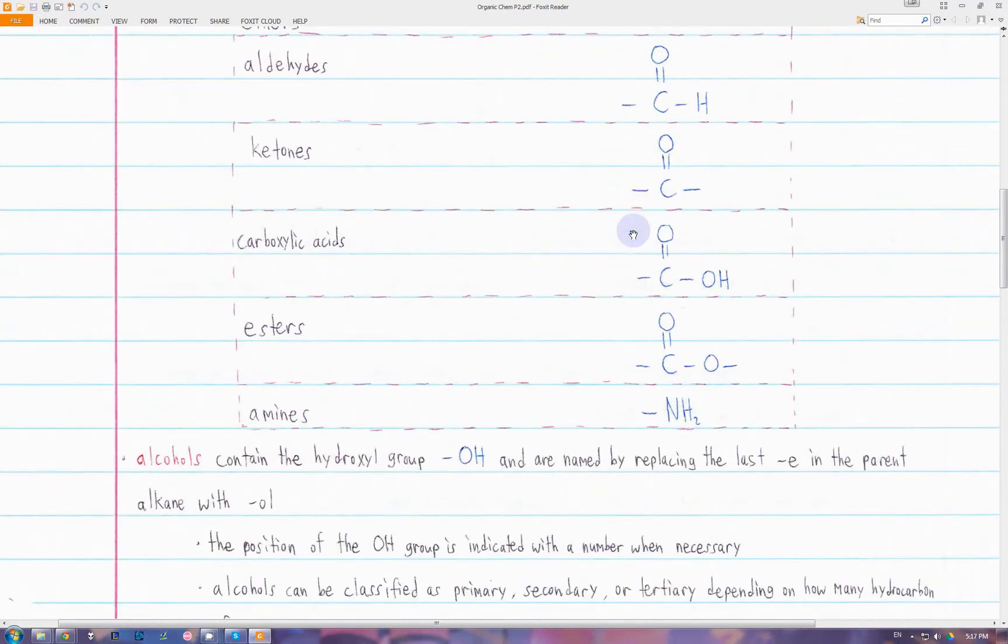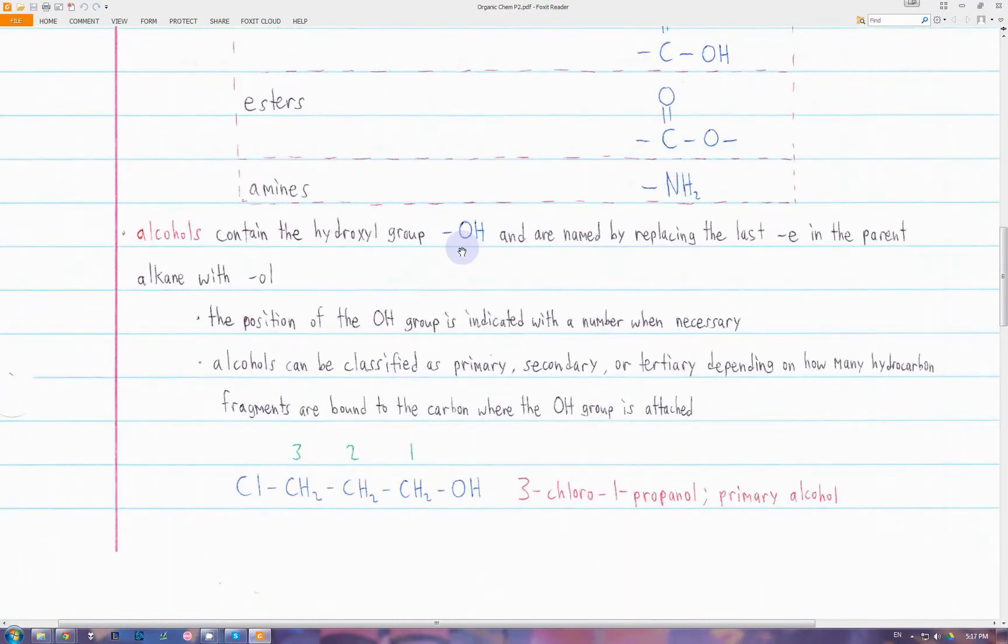The first type of functional group are the alcohols. Alcohols contain the functional group which is called the hydroxyl group, an OH. You name them by replacing the last E in the alkane which the alcohol comes from.